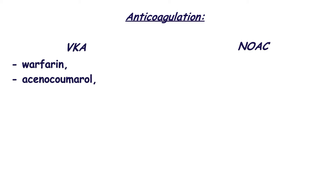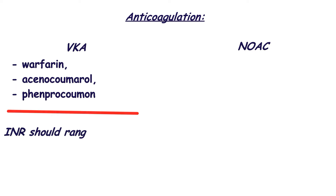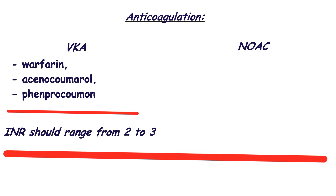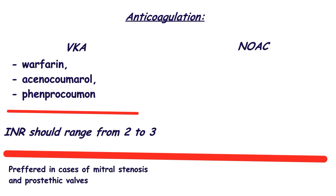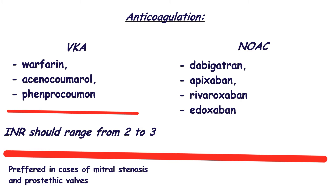VKA includes, for example, warfarin and phenprocoumon. These are the cheapest drugs for stroke prevention, but patients must control the international normalized ratio (INR), with a target value of 2 to 3. VKA is preferred in cases of moderate to severe mitral stenosis and mechanical heart valves. NOACs include dabigatran, apixaban, rivaroxaban, and edoxaban. The first is a direct thrombin inhibitor; the others are direct factor Xa inhibitors. NOACs are more expensive than VKA but cause major bleeding less often, and patients don't need to monitor INR.